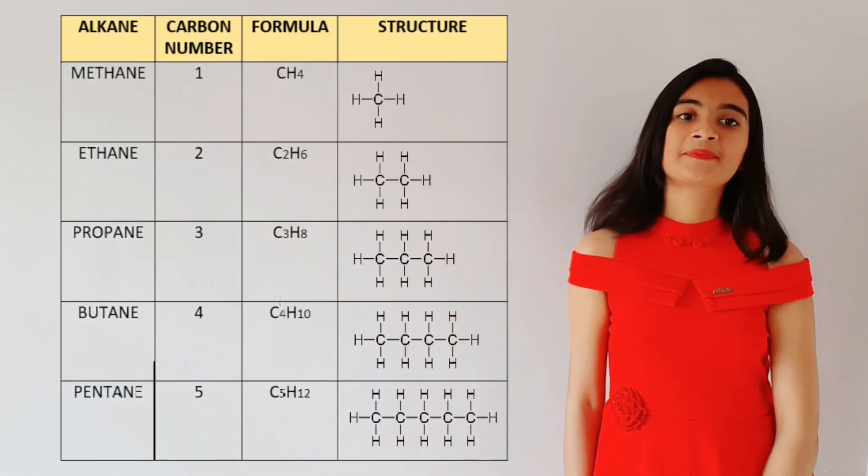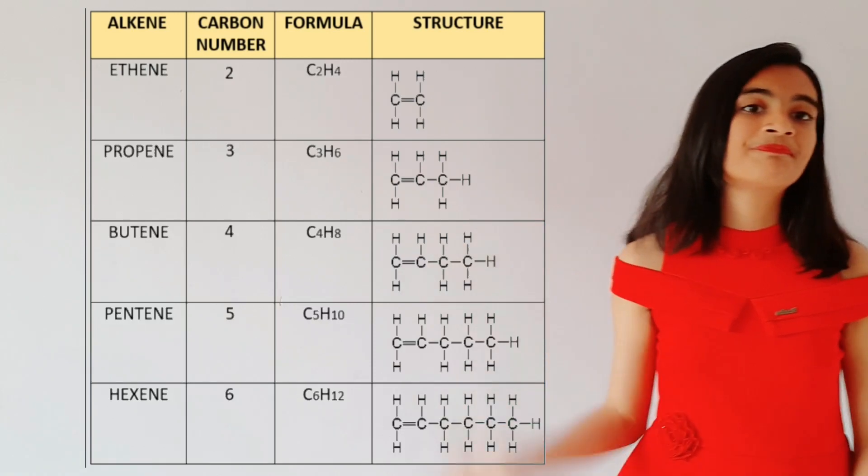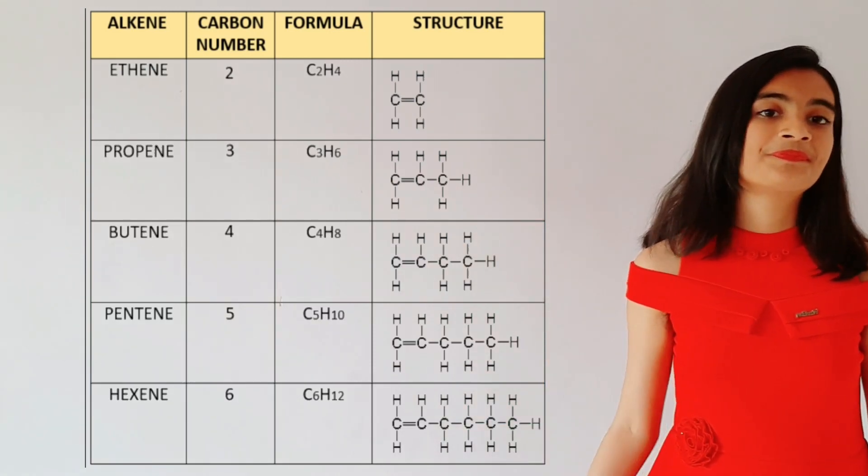The homologous series for saturated hydrocarbon compounds is known as the alkane series. The examples of the alkane series with their structures are shown following. The homologous series for unsaturated hydrocarbon compounds are known as alkenes for double-bonded compounds and alkynes for triple-bonded compounds. Examples with structures for the alkene and alkyne series are shown following.